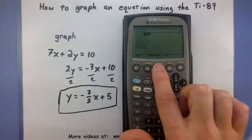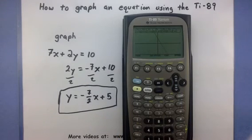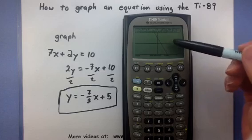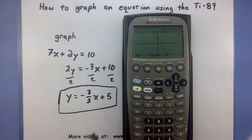So now finally we'll hit our green button and graph. We'll take a look at this. So as we can see, the line has a negative slope. Sure enough, because it's negative 7 halves. And it crosses the y axis at 5. Which is good.